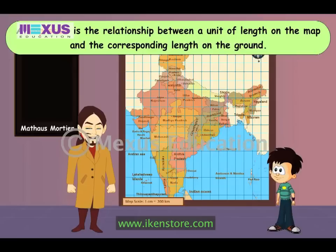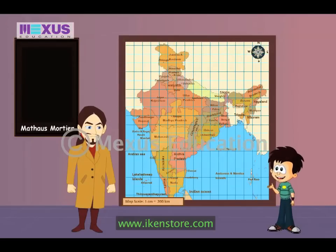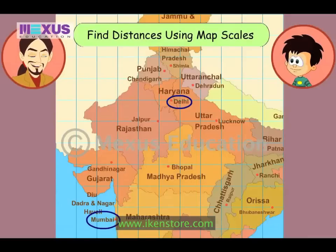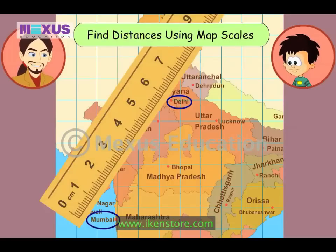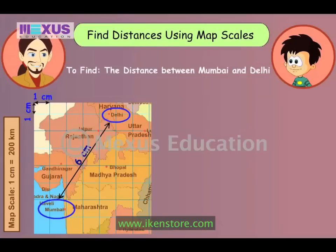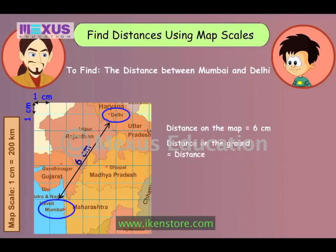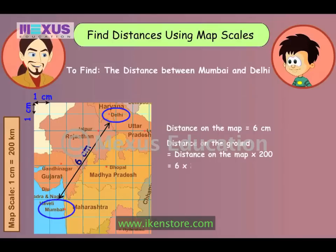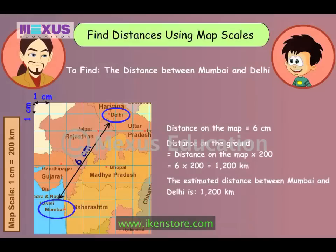This scale is so accurate that you can even find out the distance between two cities using it. Can we find the distance between Mumbai and New Delhi? Sure! First, let's find the distance on the map using this ruler. Place the ruler between the two cities and find out the distance. The distance is 6 cm on the map. The length 6 cm stands for the distance on the map, so the distance on the ground will be equal to the distance on the map multiplied by 200 — that is 6 multiplied by 200, which is equal to 1200 km.